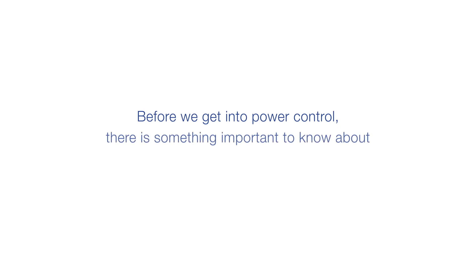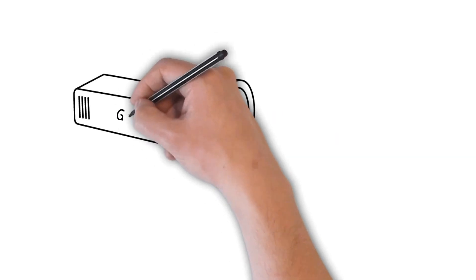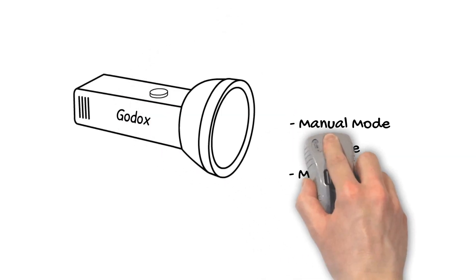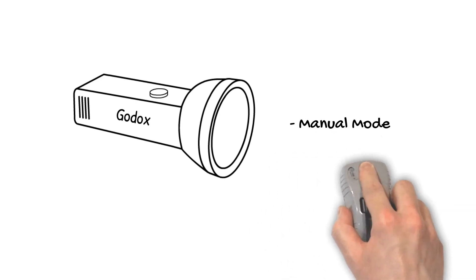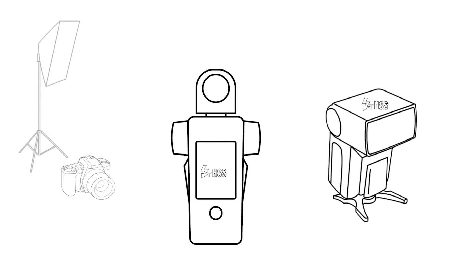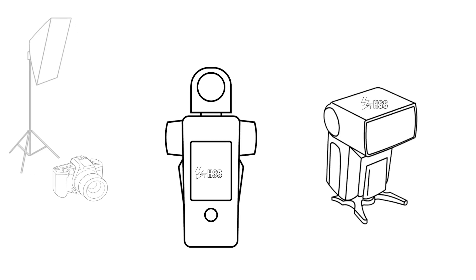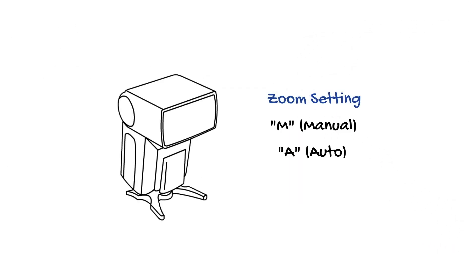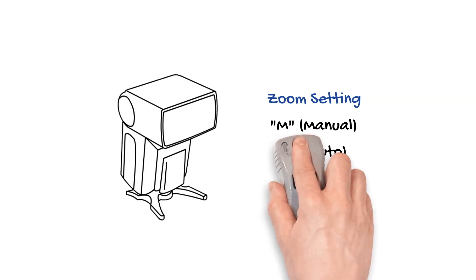Before we get into power control, there is something important to know about how the Godox radio system works. First, make sure your Godox flash is in manual mode instead of TTL or multi, and that you have HSS enabled on your flash and trigger if you plan to use HSS mode. Also, set the zoom setting of speed lights to M (manual) instead of A (auto).